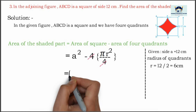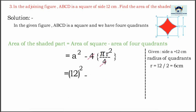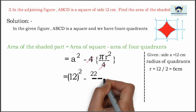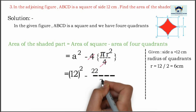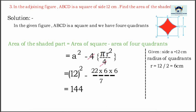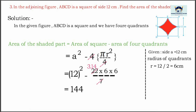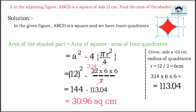The 4s get cancelled. We have 12 squared minus pi, which is 22 divided by 7, into r squared. r is 6, so 6 squared is 36. 12 squared is 144. 22 divided by 7 into 36 is equal to 113.04. Therefore, 144 minus 113.04 is equal to 30.96 square centimeter.